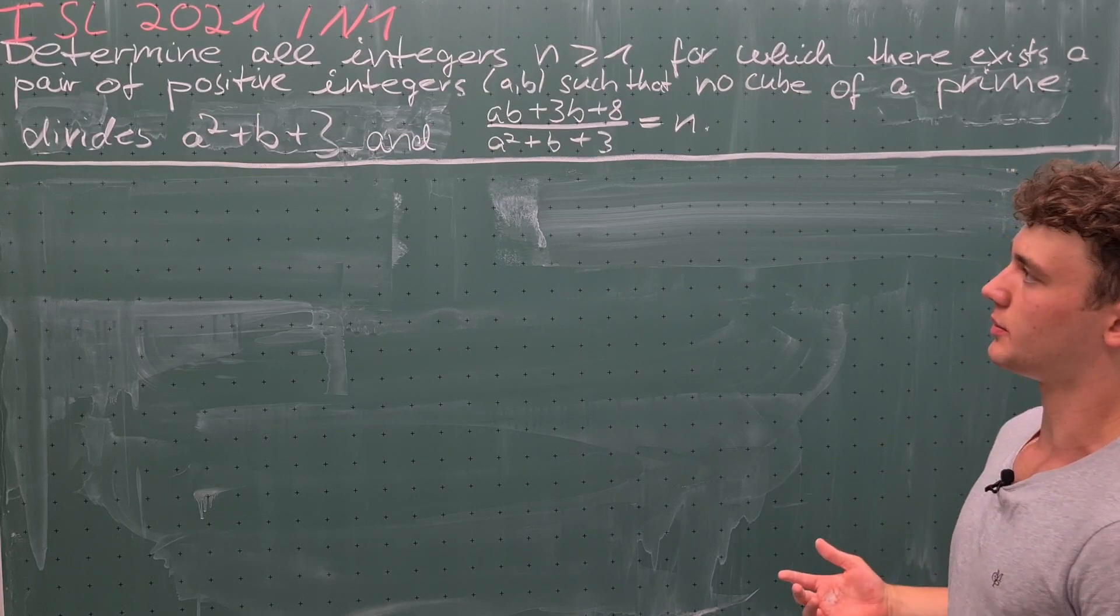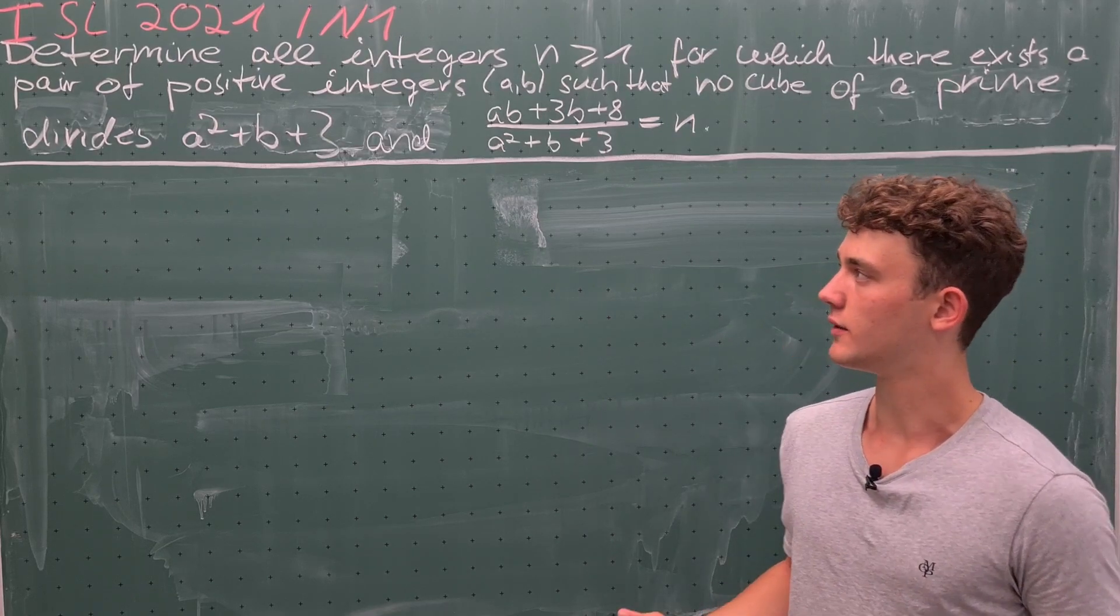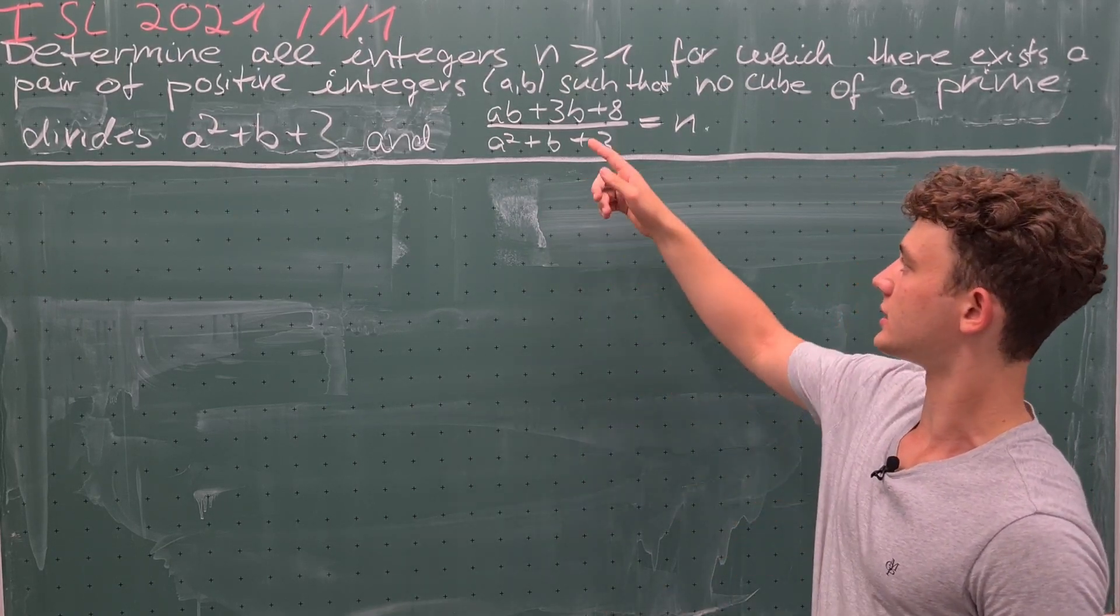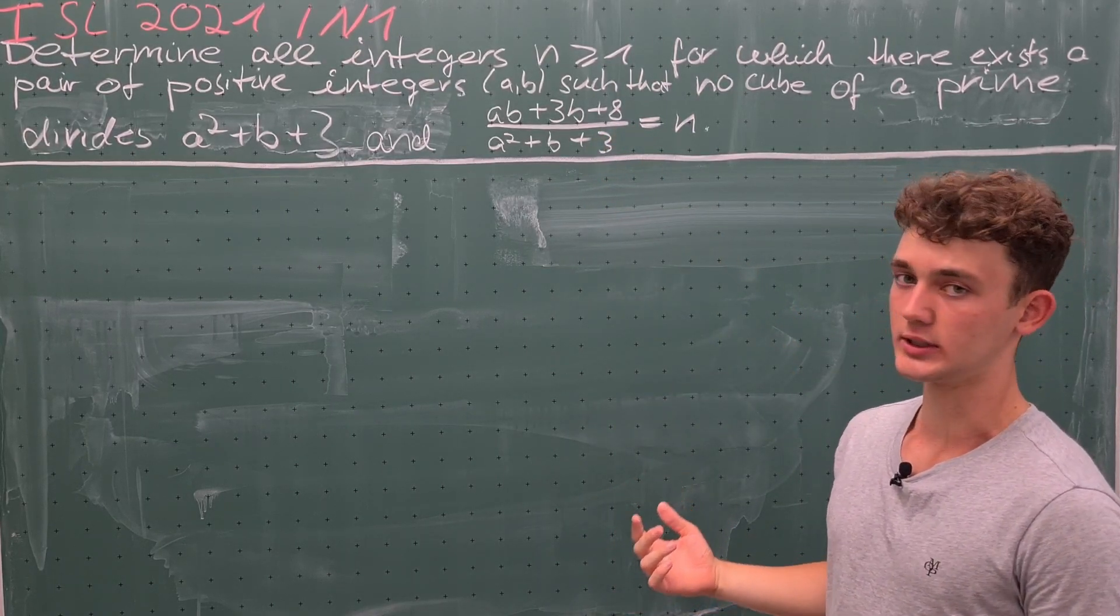for which there exists a pair of positive integers a, b, such that no cube of a prime divides a² + b + 3, and (ab + 3b + 8)/(a² + b + 3) = n.